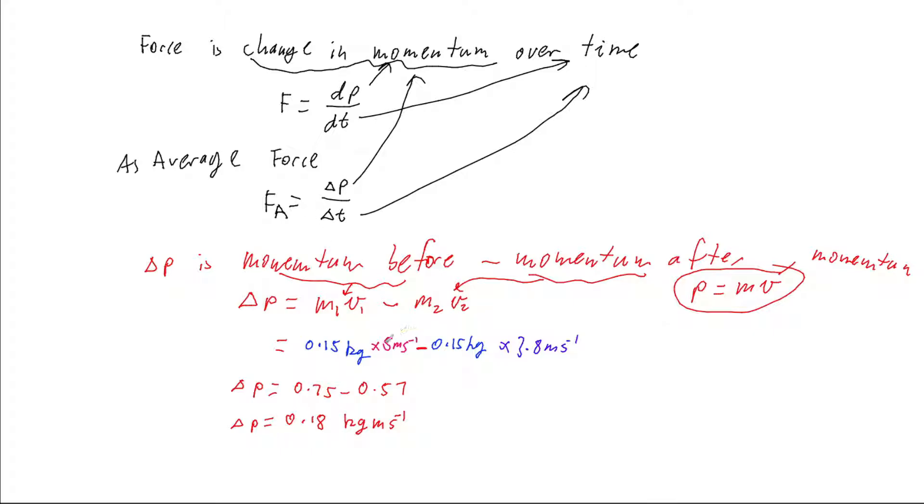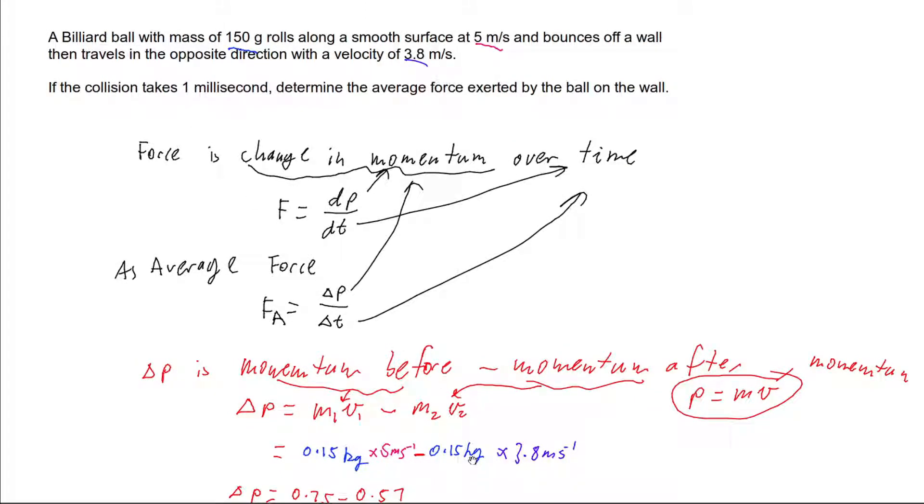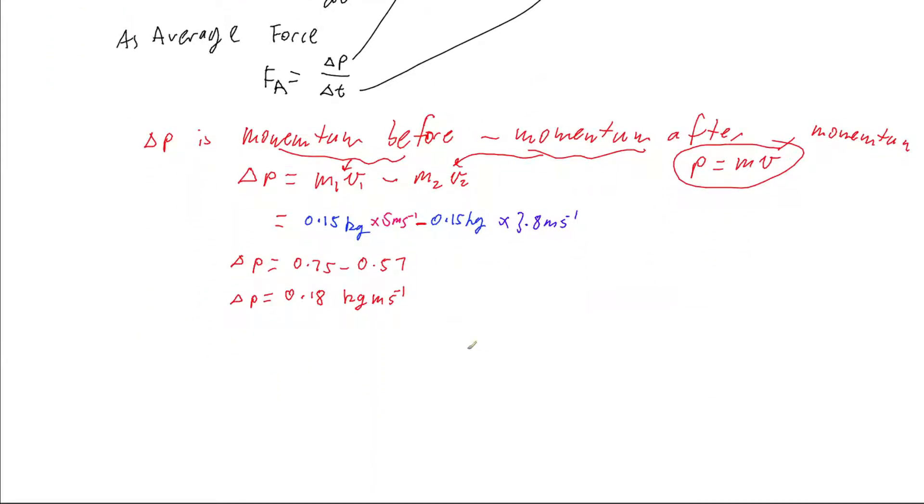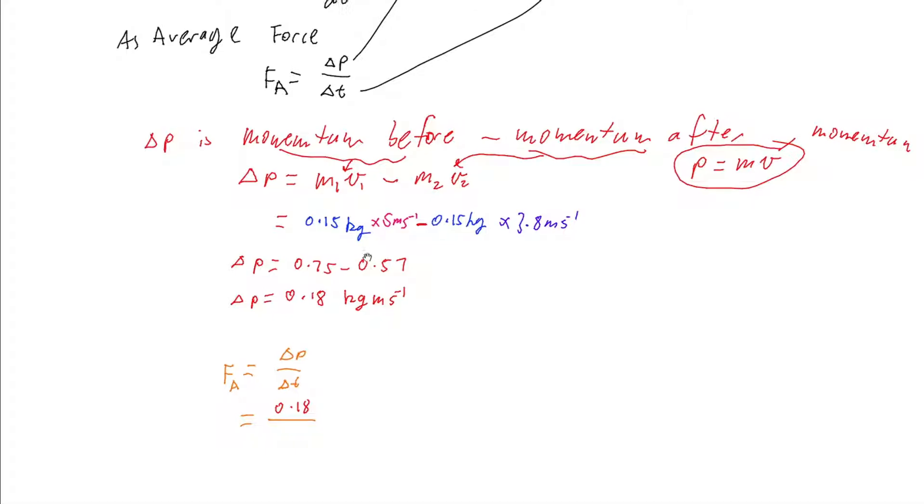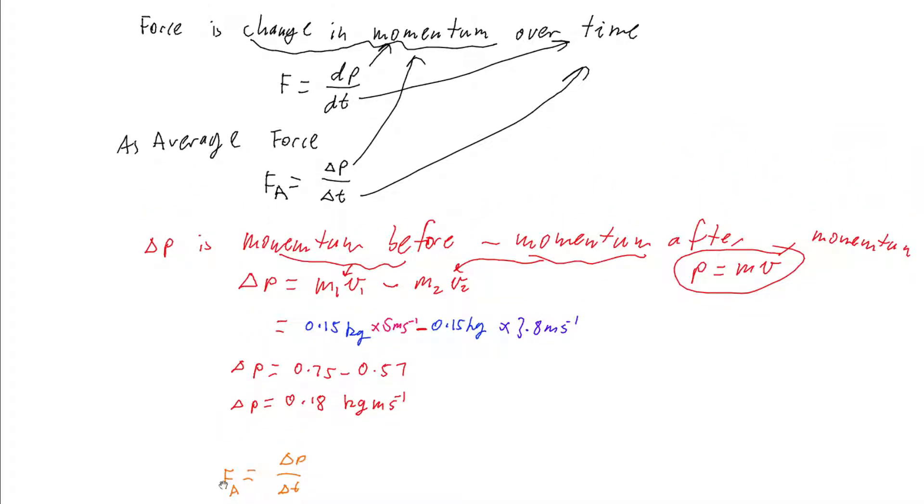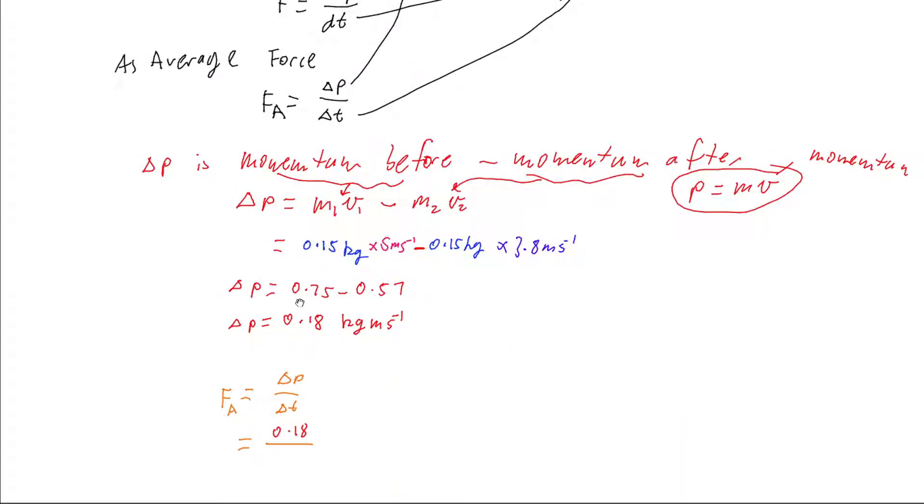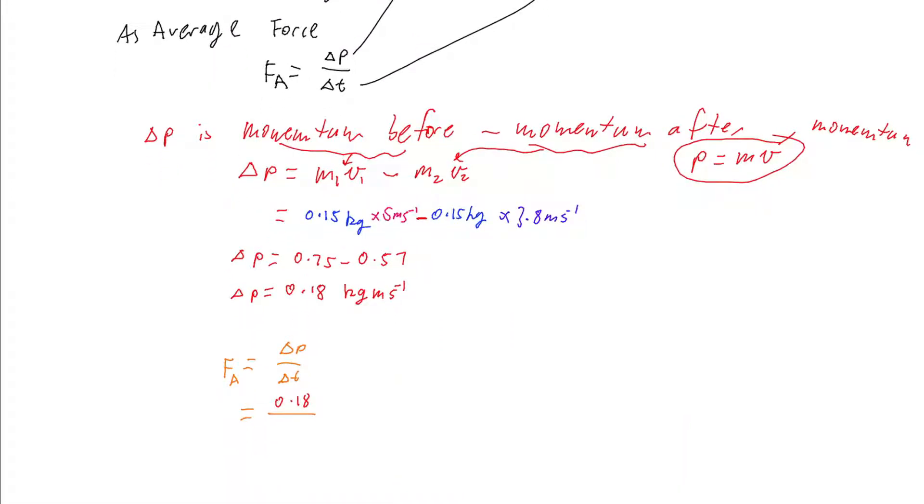I've got my delta T. Remember that was one millisecond. So now I can go and use my overall formula to get that the average force, force A, equals delta P over delta T. So my delta P we just worked out was 0.18. And then we're going to divide by delta T, which was up here as one millisecond. And one millisecond is going to be 0.001 seconds.